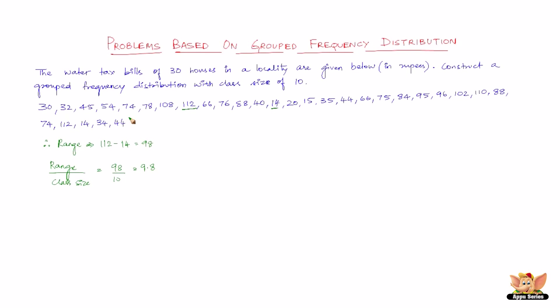Now the minimum and maximum values of the variate are 14 and 112 respectively. So we have to make the classes in such a way that the first class includes the minimum value and the last class includes the maximum value. If we take the first class as 14 to 24, it includes the minimum value 14. If the last class is taken as 104 to 114, then it includes the maximum value 112.